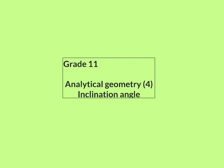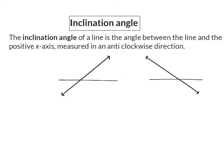In today's grade 11 analytical geometry lesson, we are going to have a look at inclination angles. The definition of an inclination angle of a line is the angle between the line and the positive x-axis, measured in an anticlockwise direction. On my sketch, I have the positive x-axis and I'm measuring anticlockwise to the line to get my inclination of theta. And in my second sketch, once again measured anticlockwise to the line, I have my inclination angle of theta.